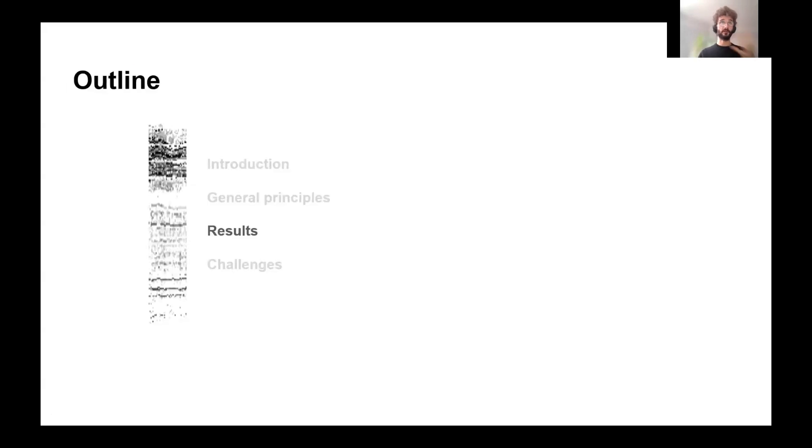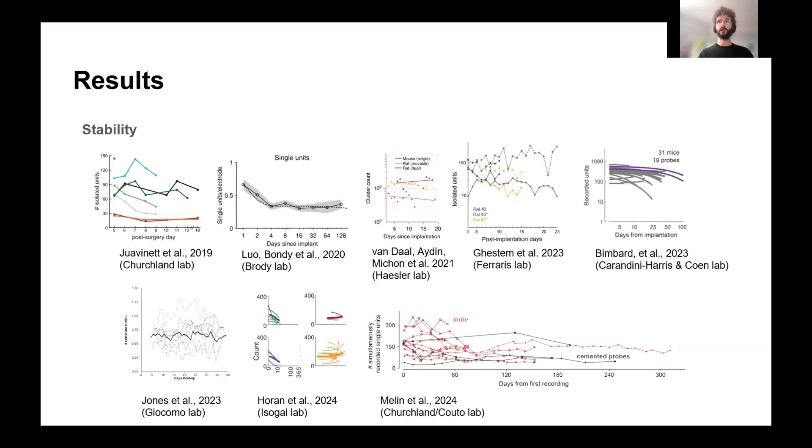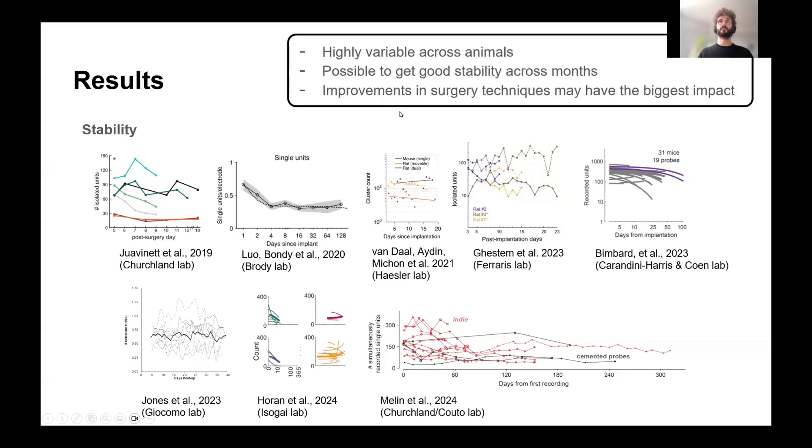Now I'm going to go over a bit of results and what you can obtain with those probes, especially the reusable ones. And the first thing you may wonder is how stable is it? How well can I hold my neurons over time? And so here are all the different figures you can find from all the different papers. And in each of these plots, you have the number of days here and the number of units that were recorded. And you can see that, you know, sometimes it decreases. Overall, it's quite stable. But one thing I want to mention is there's a... it's highly variable across animals.